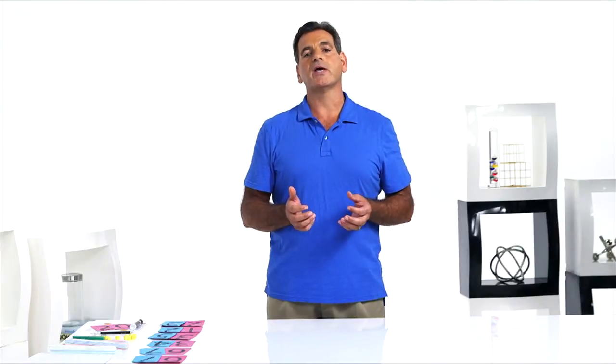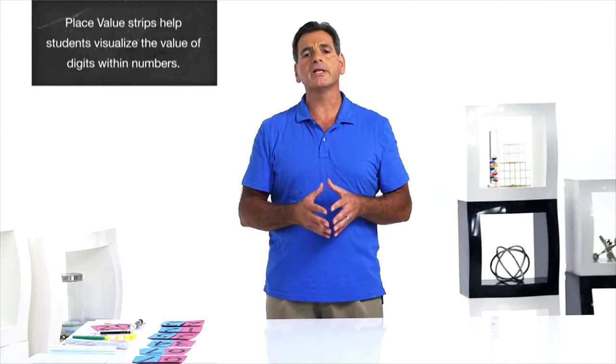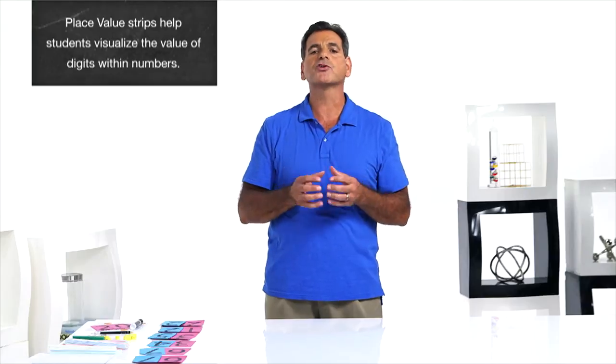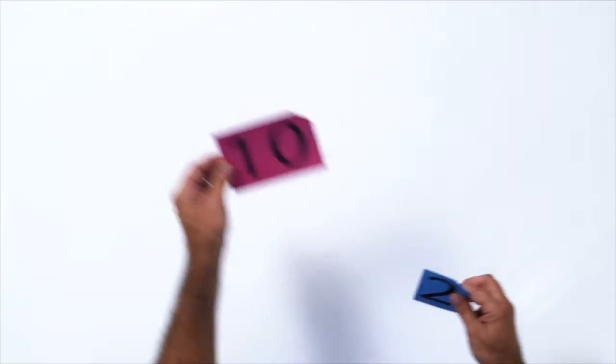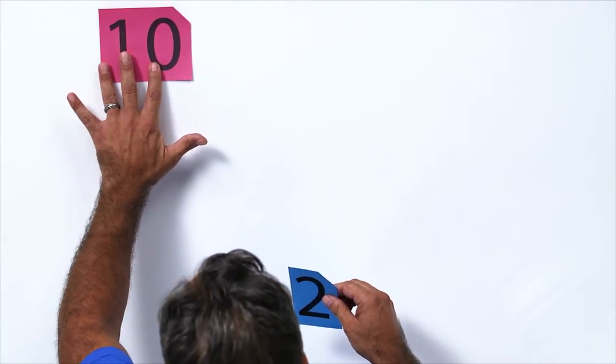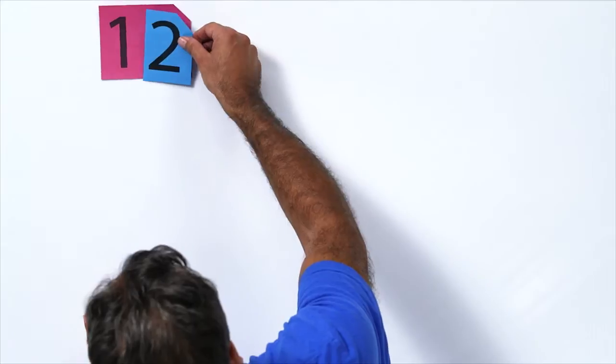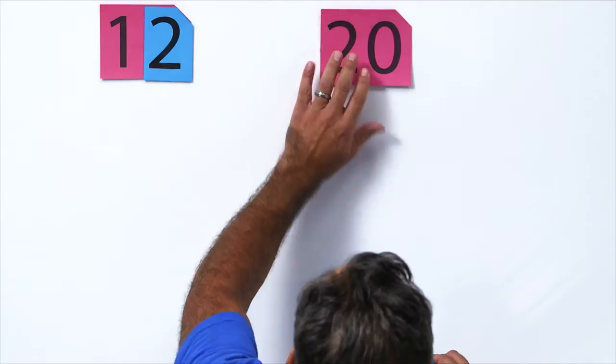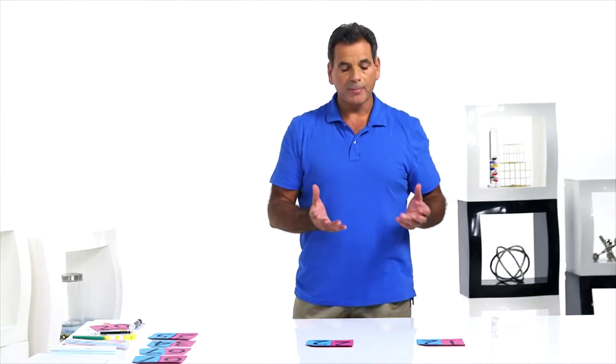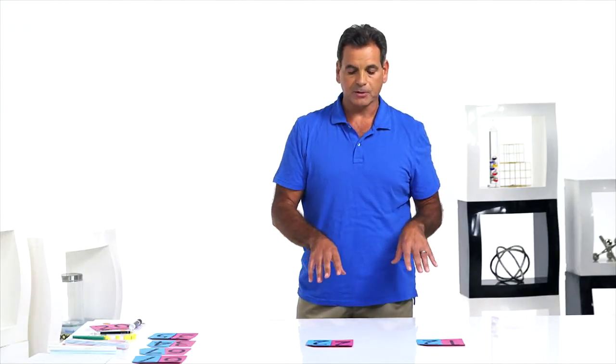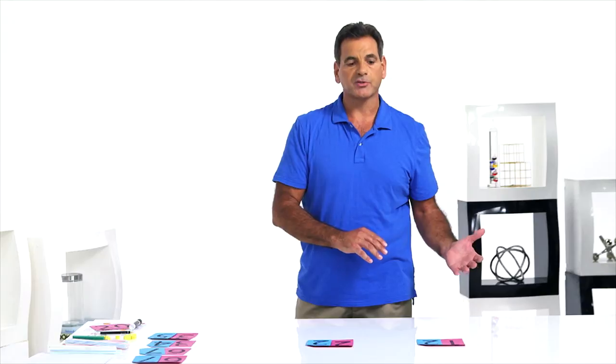This is a standard where students learn the terms greater than and less than and the symbols that go along with them. For this standard, we will use place value strips. These strips really help students see how numbers are built, meaning the structure of numbers. Let's build 12 and 22. 12 is a 10 and a 2. 22 is two tens, a 20 and a 2.